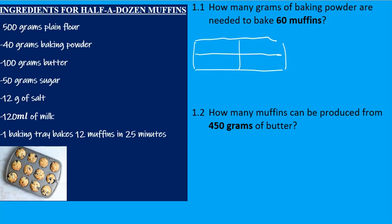Let's look at the ingredients on the left — the ingredients for half a dozen muffins. Remember, a dozen is twelve and half a dozen is six, so all these ingredients on the left are for baking six muffins.